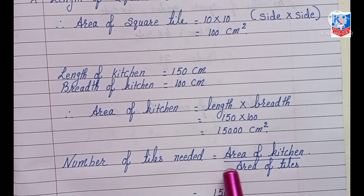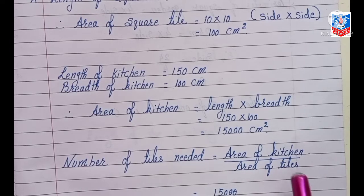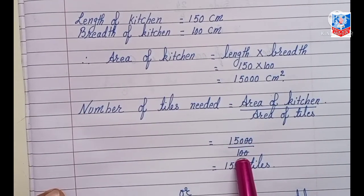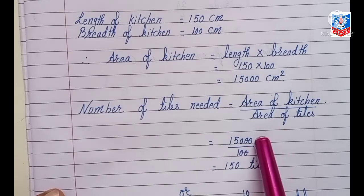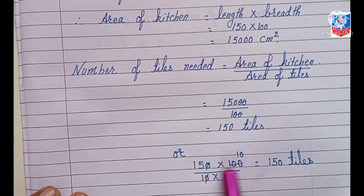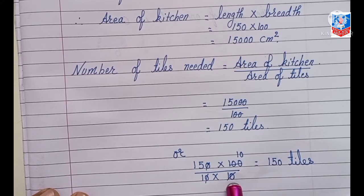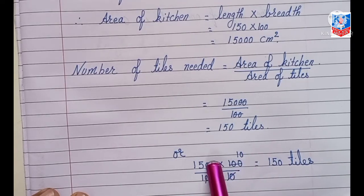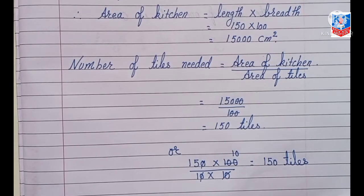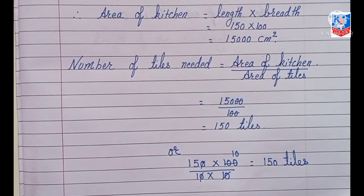Number of tiles needed is equal to area of kitchen divided by area of tiles. Area of kitchen is 15,000 centimeter square and area of tiles is 100 centimeter square. Cancelling the two zeros, we get 150 tiles. Or directly: 150 into 100 divided by 10 into 10 gives 150 tiles. So 150 tiles are needed to floor the kitchen.